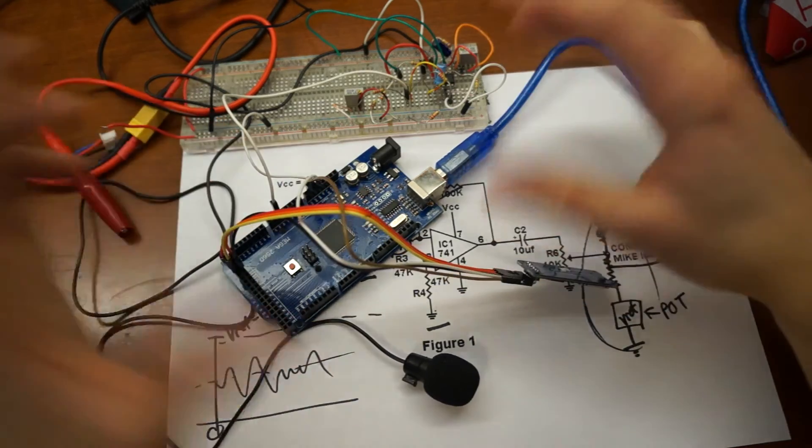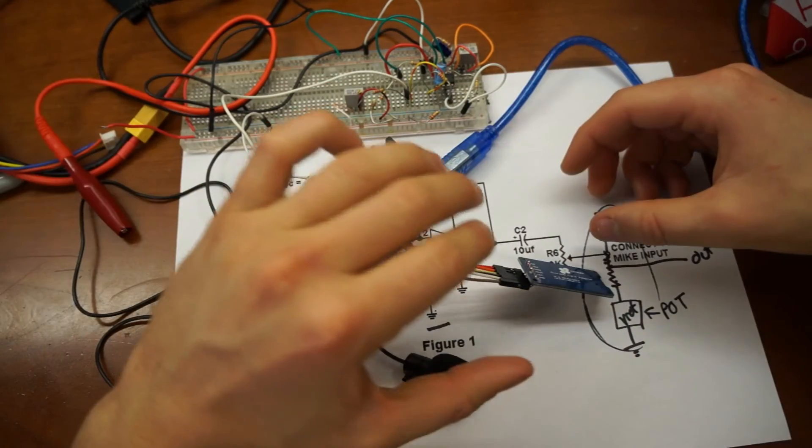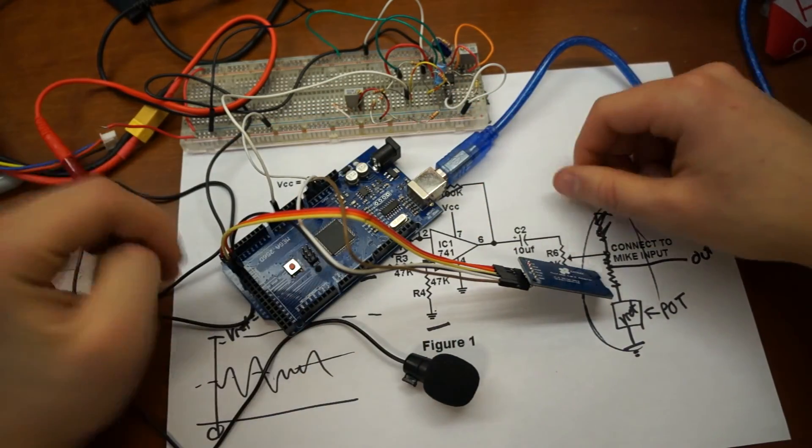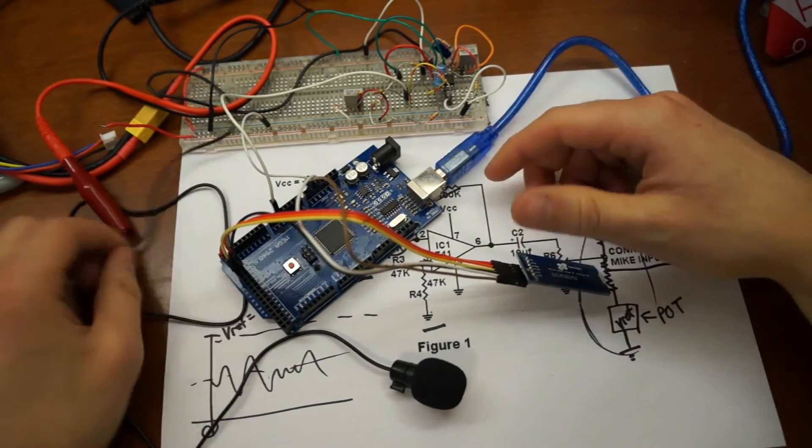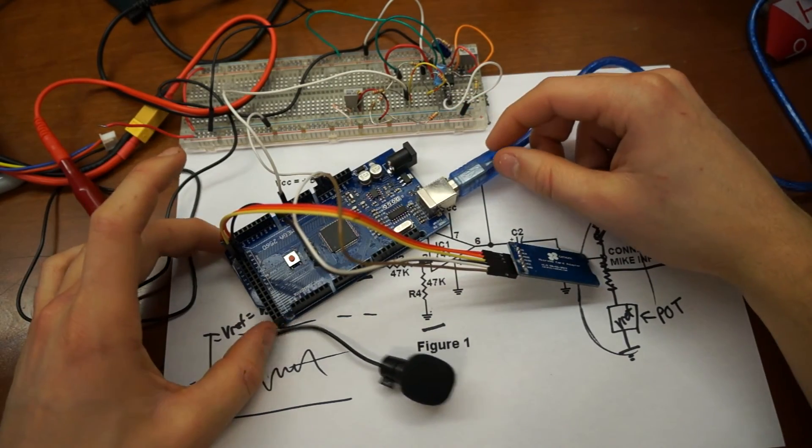And so using this dual buffer method, you can keep acquiring data while dumping it to a file at the same time. And so yeah, go ahead and check out the code in the description. It's pretty easy to read. I'll try to comment it up as best I can.